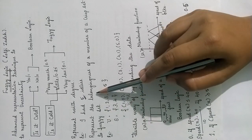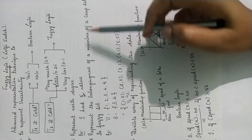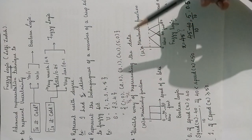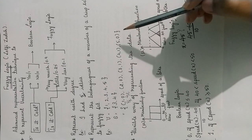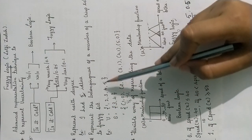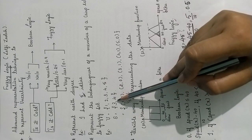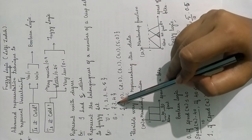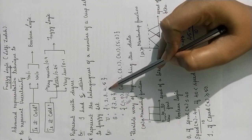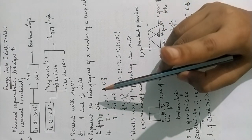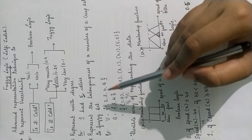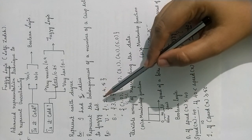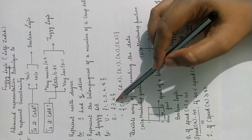The next concept is representing the belongingness of a member of a crisp set to a fuzzy set. Here we are checking the belongingness of a member. Consider the universal set which contains the values 1, 2, 3, 4, and 5, and the subset contains 3 and 4. If the value is contained in the subset and also present in the universal set, we represent it with value 1. If the value in the universal set is not present in the subset, we represent it with value 0.